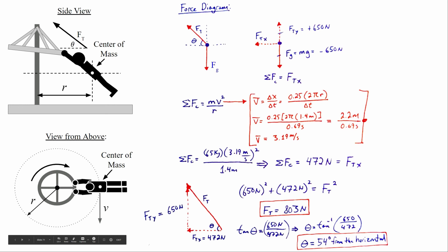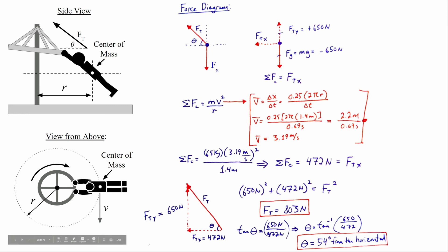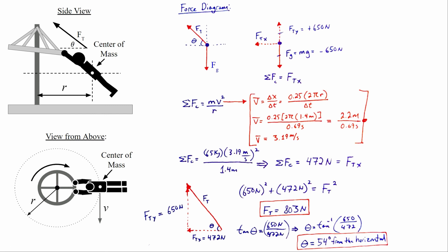So in the video we just saw, the combined force I needed to hang on while spinning was about 803 newtons, and my body was making an angle of approximately 54 degrees from the horizontal.